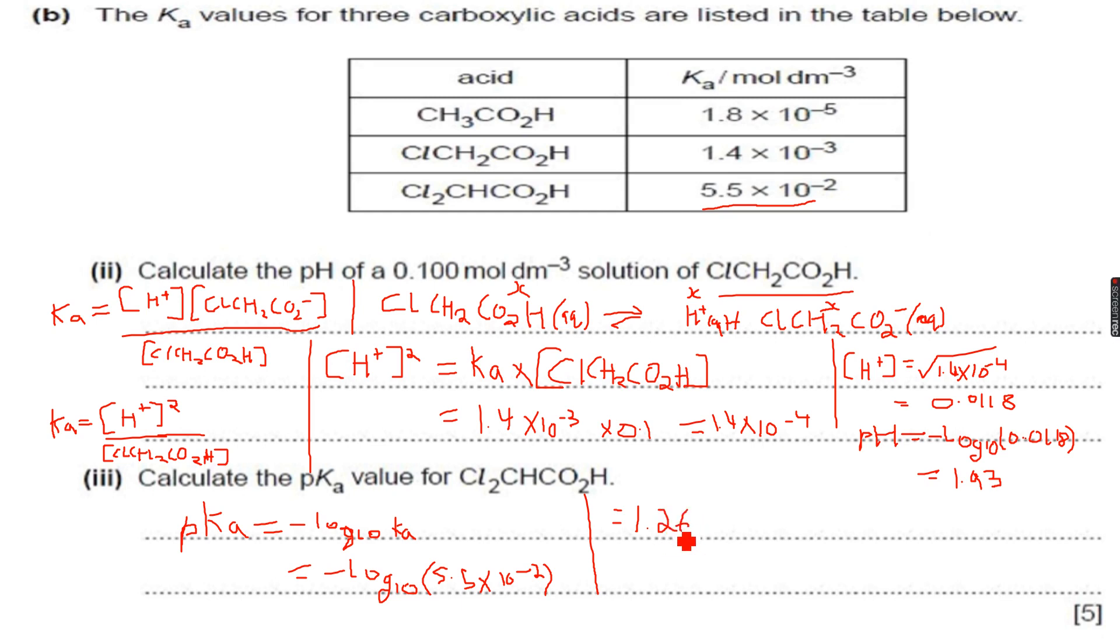This is the value of pKa, and that's how we calculate pKa using Ka. So the relative acid strength can be seen from this value. If we calculate the pKa values of all three, then we can compare their acid strengths by looking at the value of pKa. The lower the value of pKa, the more acidic the substance.